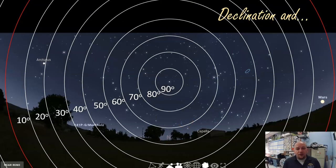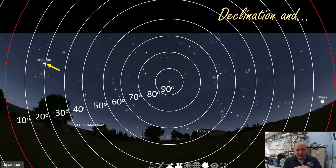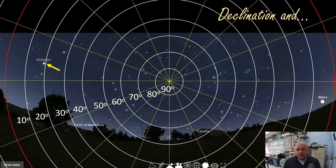Now we can get closer to describing where Arcturus is. Arcturus has a declination of approximately 19 degrees, which tells us how far it is from the celestial equator. The problem is, declination alone doesn't tell us where on that circle Arcturus falls — it could be at many different points all sharing the same declination. So we need another coordinate: lines that run right through the pole and extend out in every direction, which we call right ascension.